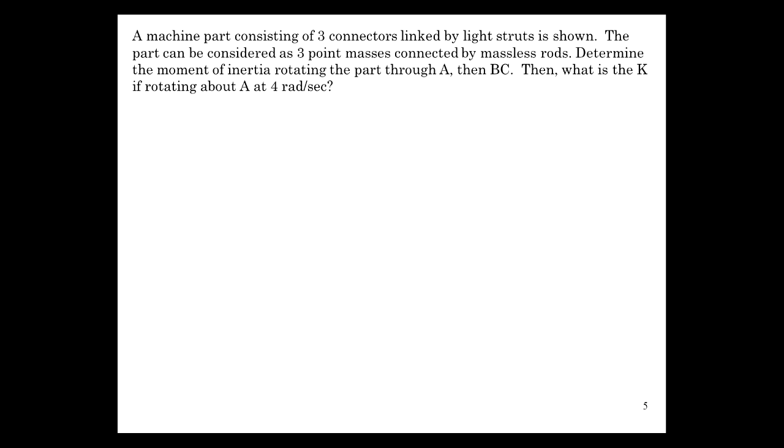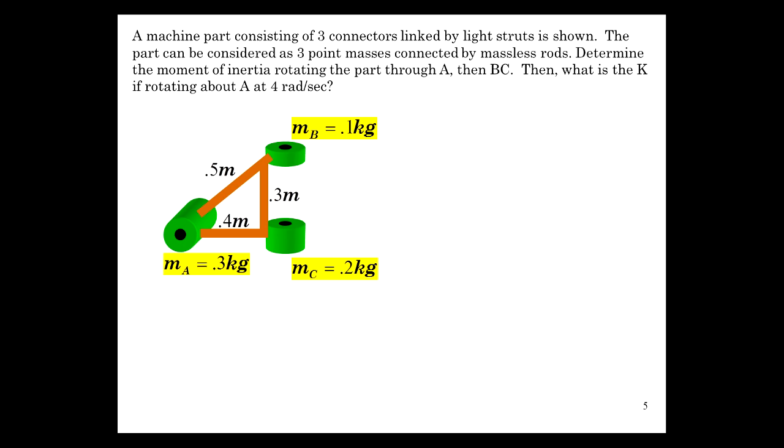Let's do an example where we're looking at the moment of inertia of a little structure consisting of point masses. I know it doesn't look like point masses, but these connectors, as they're called, are considered point masses at the end of these struts. And what we're going to do is look at rotating it about an axis through A, so it's going to be spinning around like this, and we're going to rotate it through BC and have it spin around, and it's kind of hard to show, but spin around that axis of symmetry. Check the moments of inertia, check the moments of inertia, and then get the kinetic energy, also for spinning at 4 radians per second.